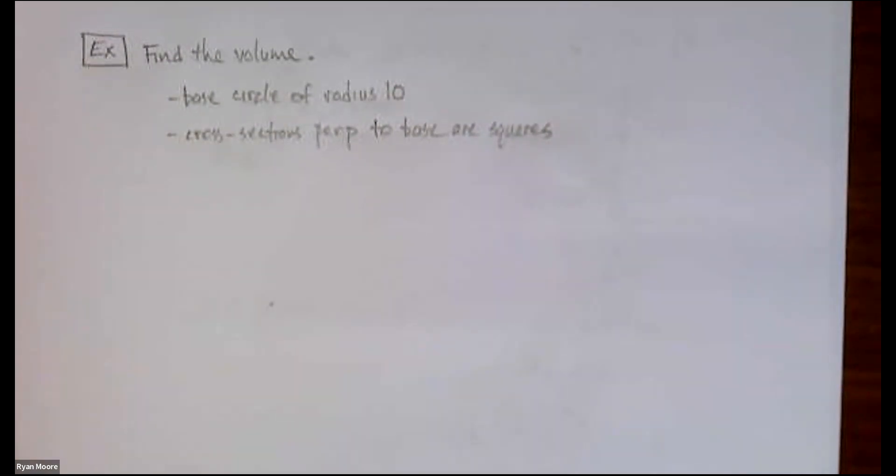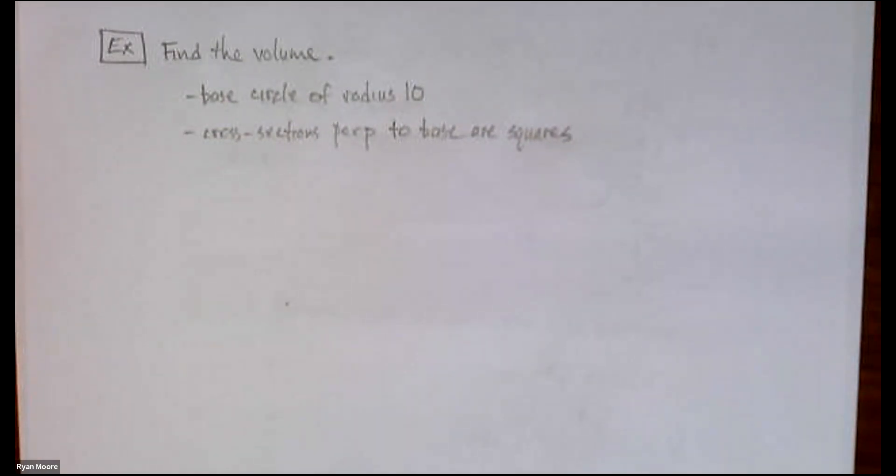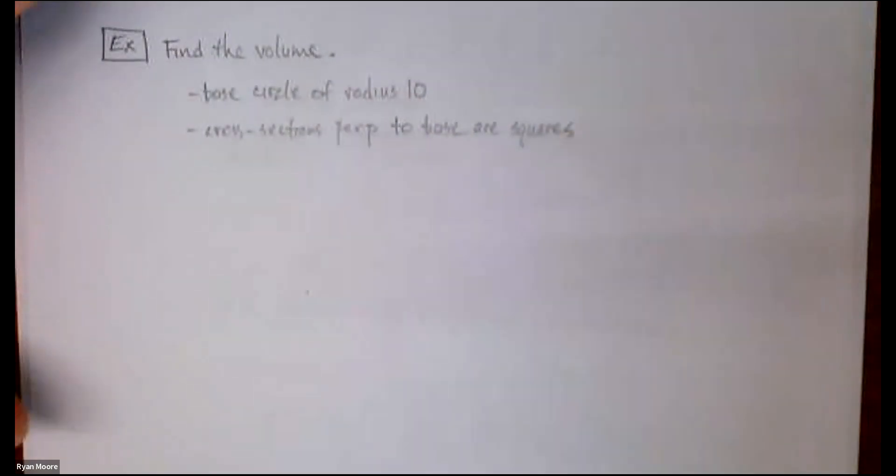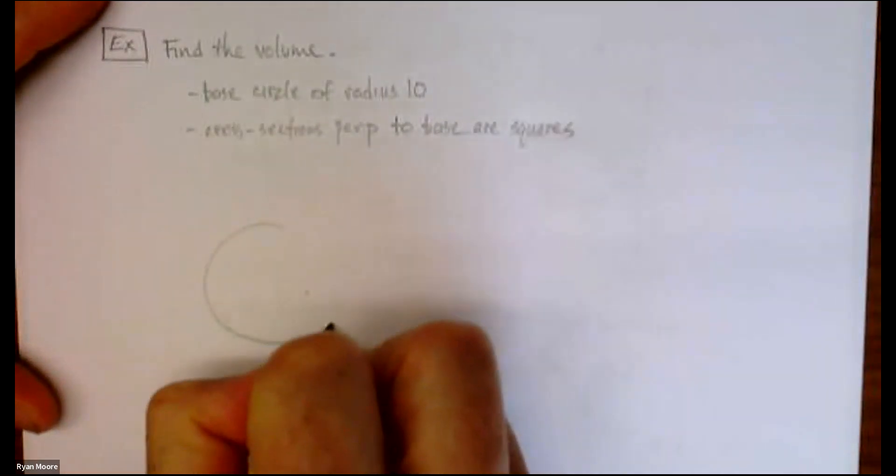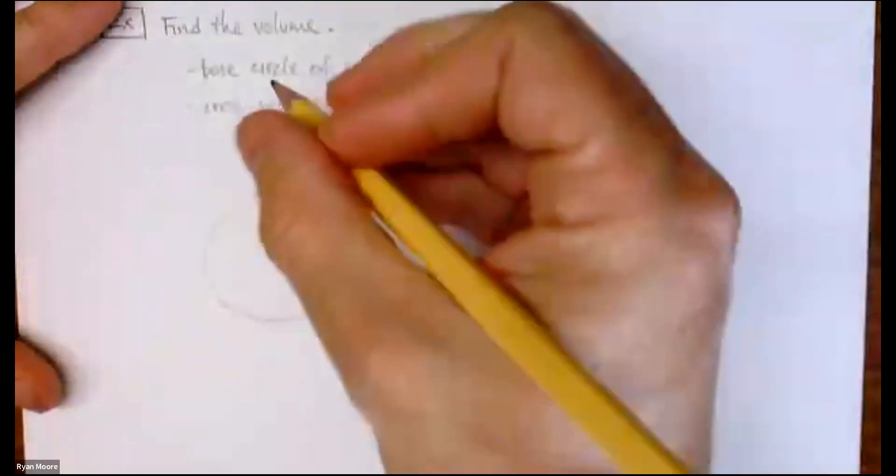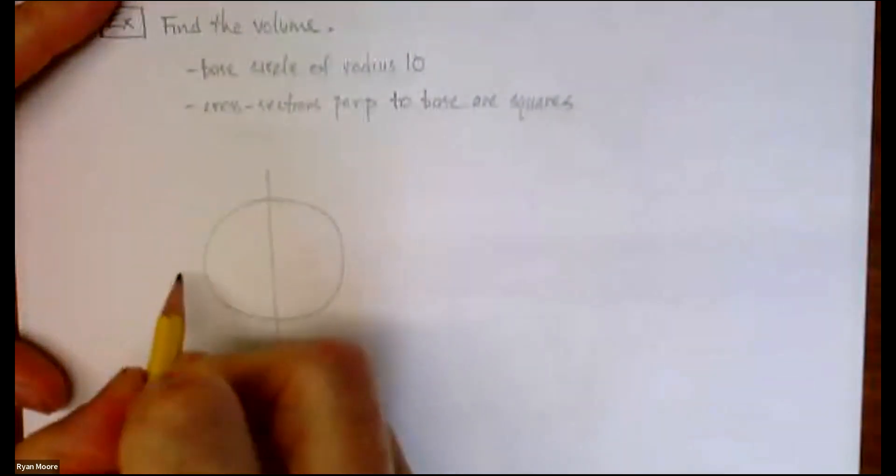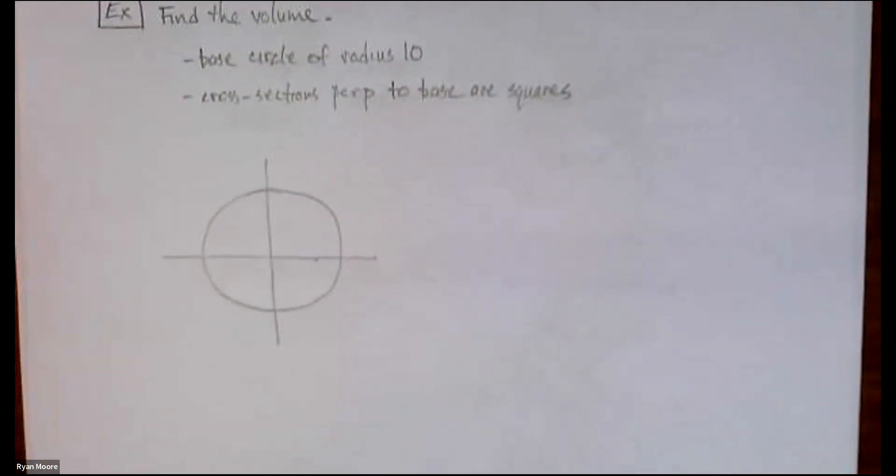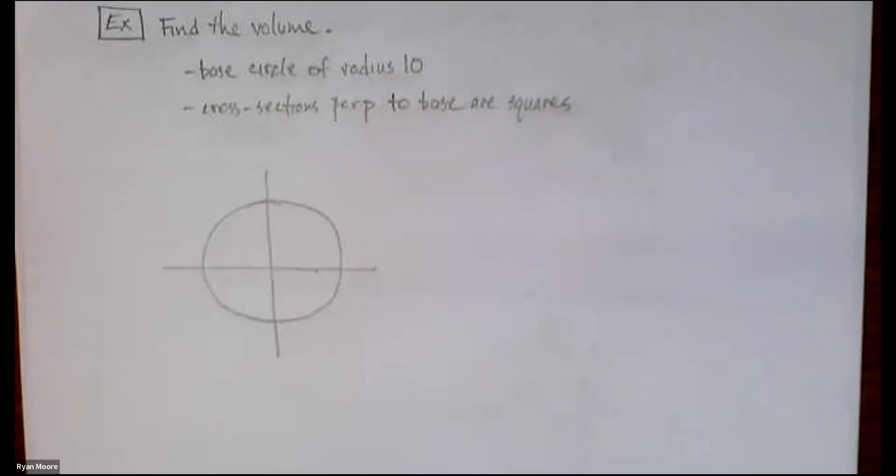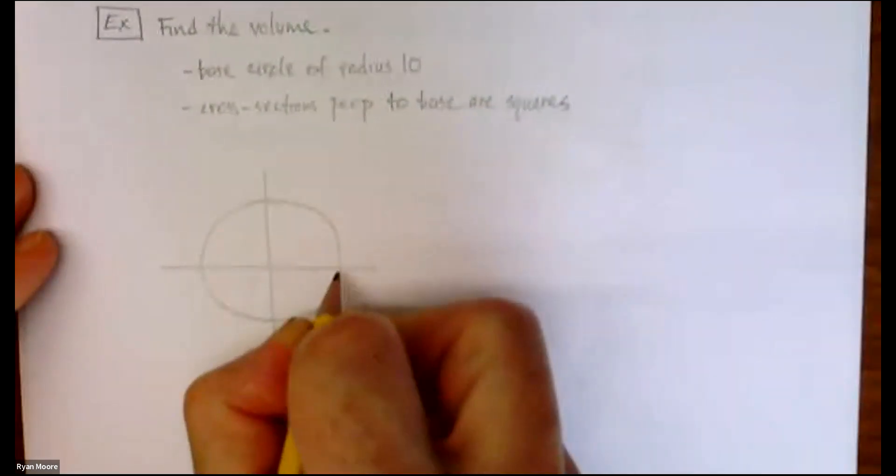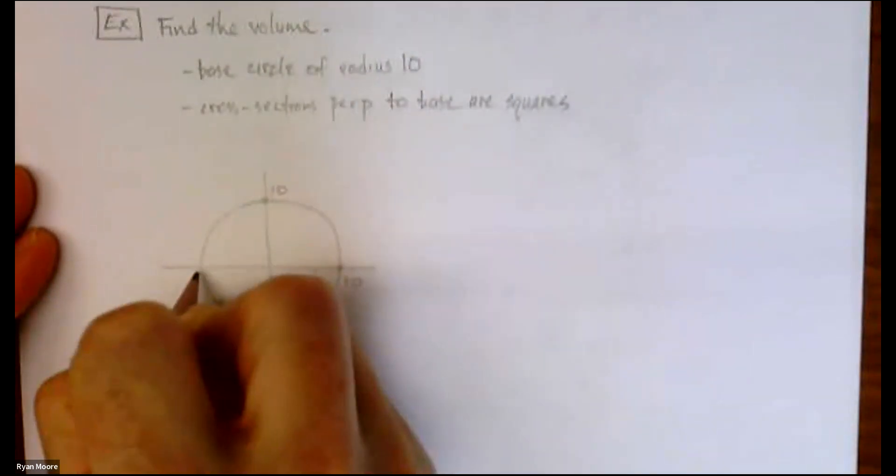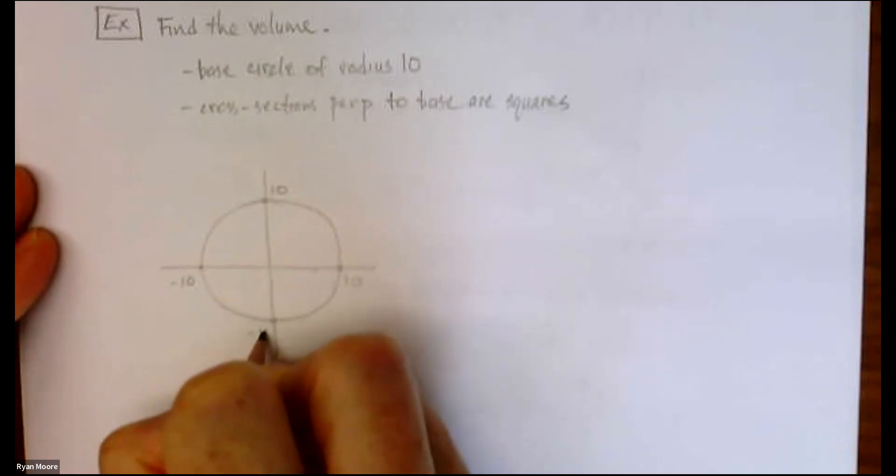Alright, so where to begin? Let's draw this out, let's draw the base, let's draw those cross-sections. Here's what I recommend: the base is a circle. Let's draw that on top of an xy plane. We're going to have to have variables involved here. The way to do that is to lay an xy plane or xy axes on top of that circle. Best way to do it is to put the origin right at the center of the circle. Then we know the radius is 10, we've got 10, 10, negative 10, negative 10 like so.